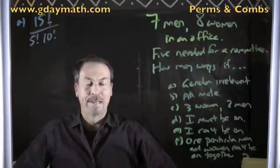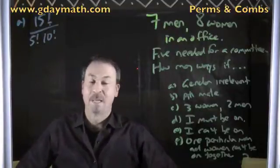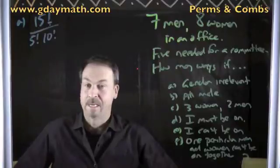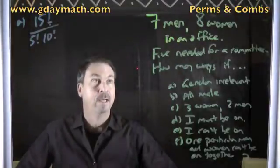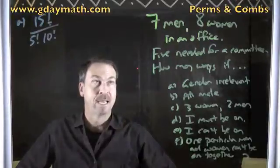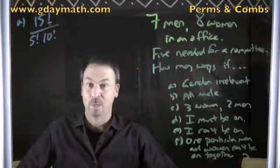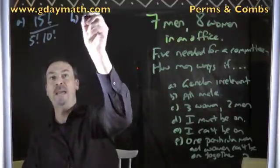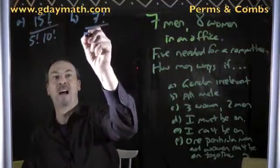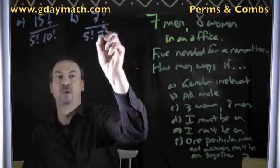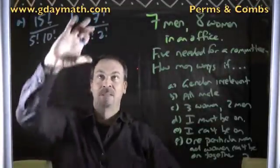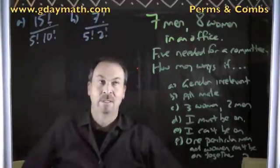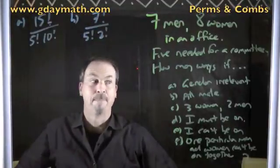Part B: how many ways can I make the committee of five if it must be all male? Well, there are seven men and eight women in the office. It has to be all male, so I've got seven men to deal with — choose five of those for a committee. Of the seven men, five will be labeled 'on the committee' and two will be labeled 'lucky.' The eight women aren't even in the consideration here. The problem just reduces to those seven men.